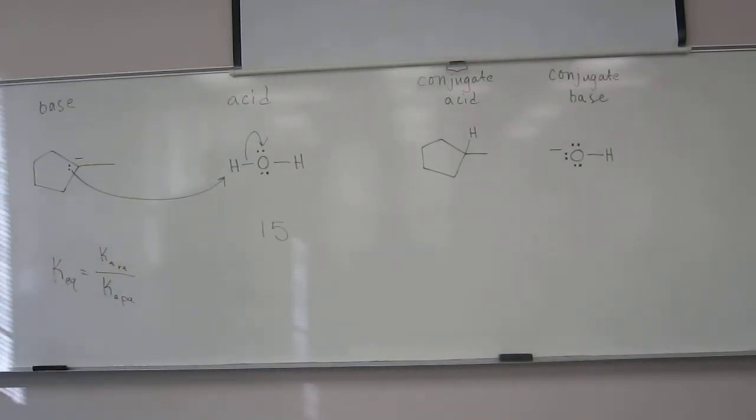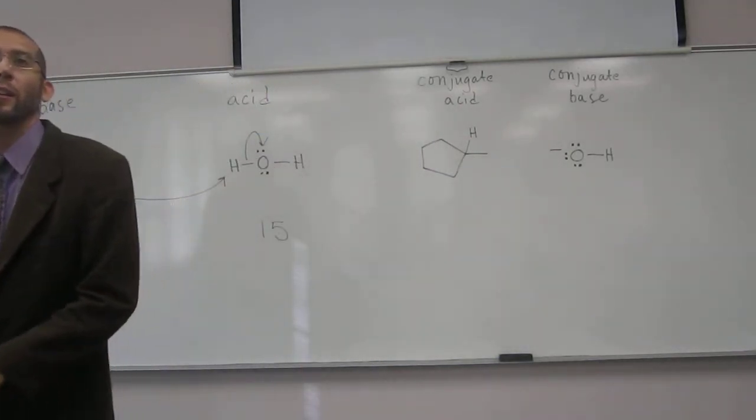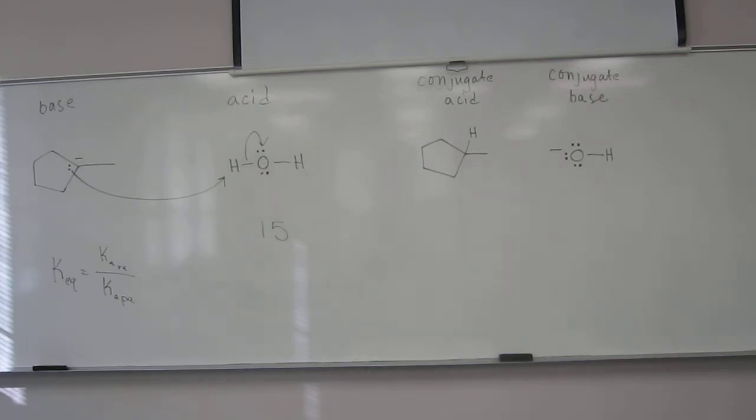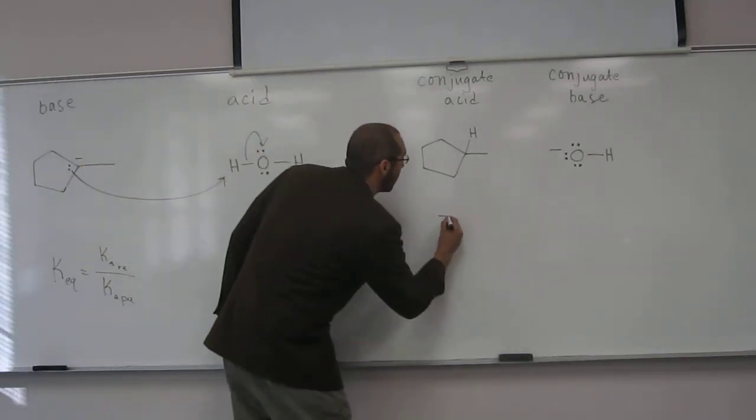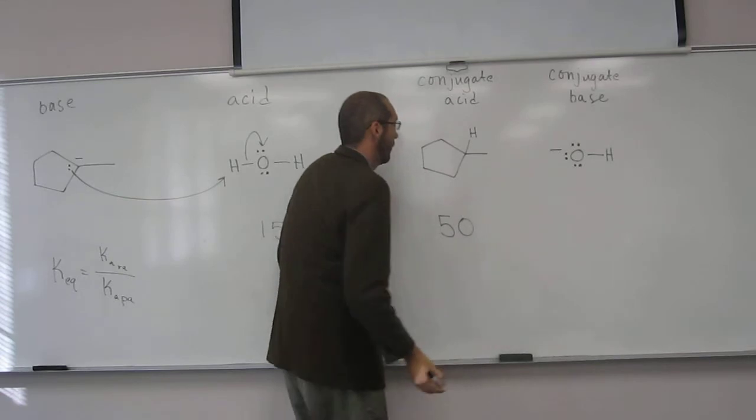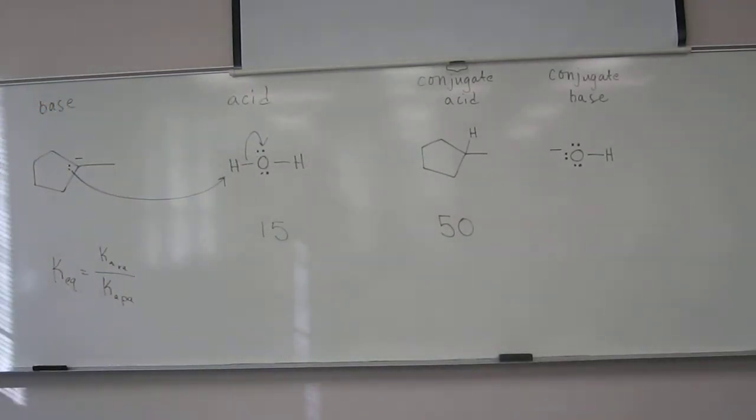So what do we need to figure out now then? The Ka of the product acid or conjugate acid. Can anybody find that on your pKa table? Would you treat it as an alkane? It's an alkane. Very good, yeah. So you would treat it as an alkane. So it would be 50 on our particular pKa table. And of course, if your pKa table tells you something different than these pKa values, use that pKa value on your particular pKa table. For my class, use my pKa table.